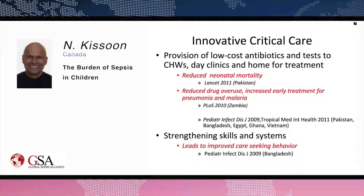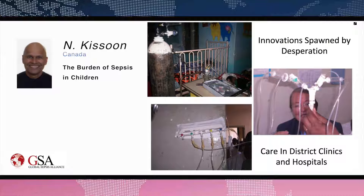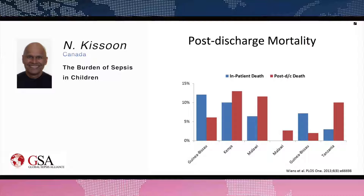Better skills and systems improvement have led to better seeking of care. Pneumonia is the number one killer in the world, and provision of oxygen and CPAP — very simple measures — may save 35% of lives, yet in many parts of the world oxygen is not available. Post-discharge mortality in children is a major problem. Studies from Washington State, as well as Guinea-Bissau, Kenya, Malawi, Uganda, and Tanzania showed that post-discharge mortality for sepsis is as high — and in some cases higher — than during the acute episode, with death often occurring within the first few weeks to months, creating opportunities for intervention.